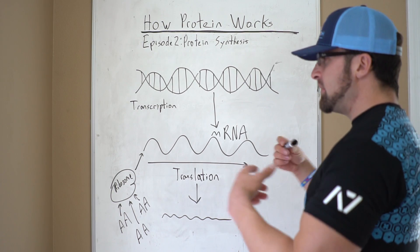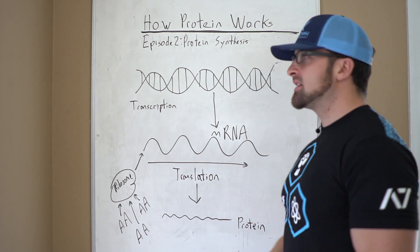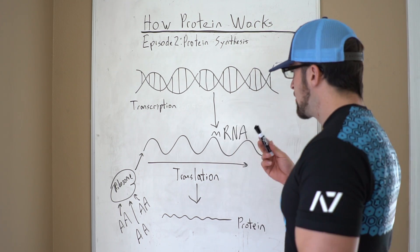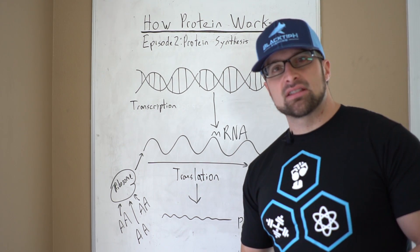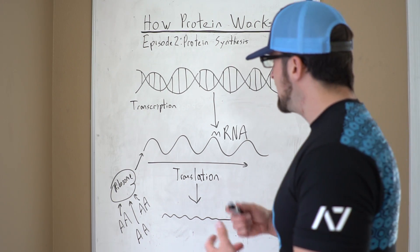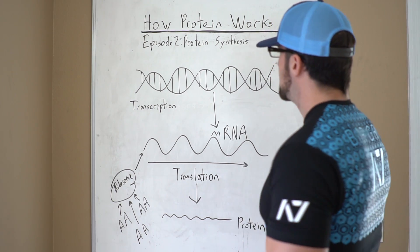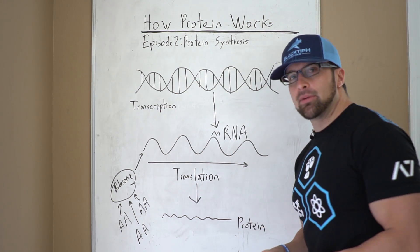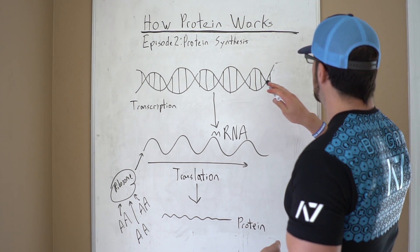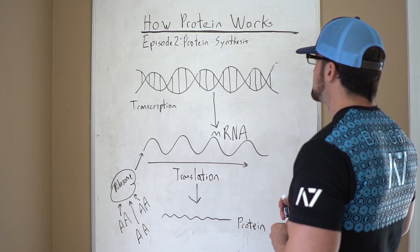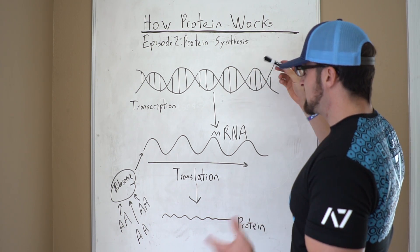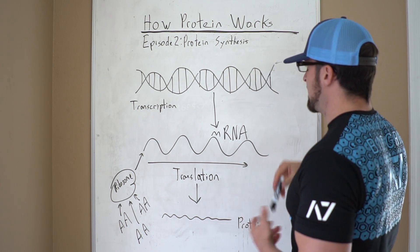So let's say we do something that sends a signal to the cell — like resistance training — that causes us to increase the rate of synthesizing myosin or other proteins in skeletal muscle. How does that actually work? Well, here we have DNA, which is double-stranded — deoxyribonucleic acid. And when the signal is sent, it undergoes a process of transcription.